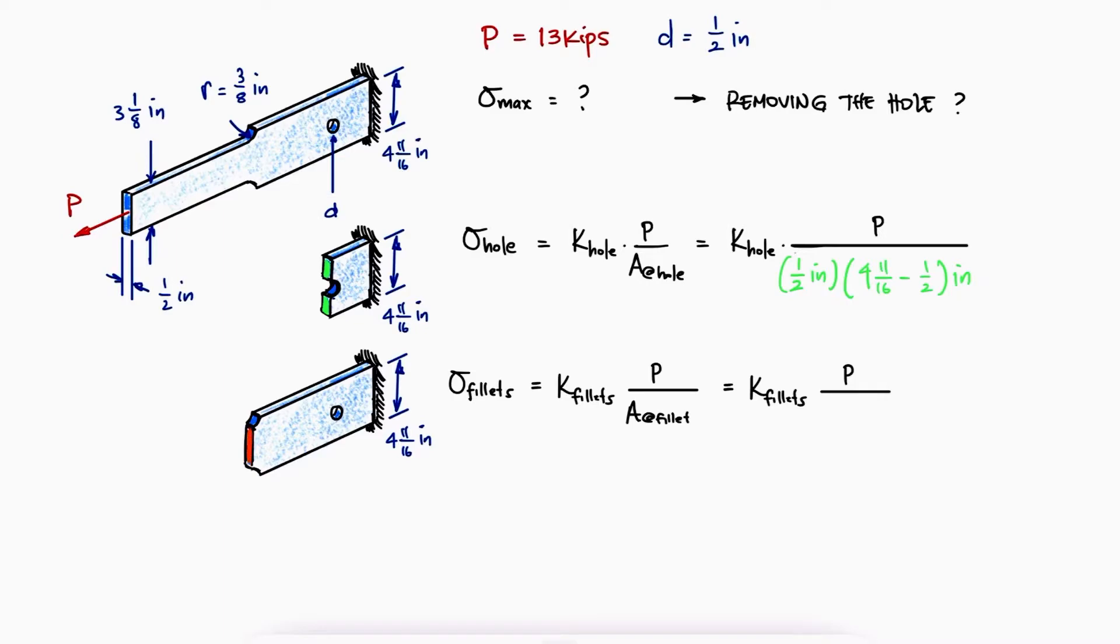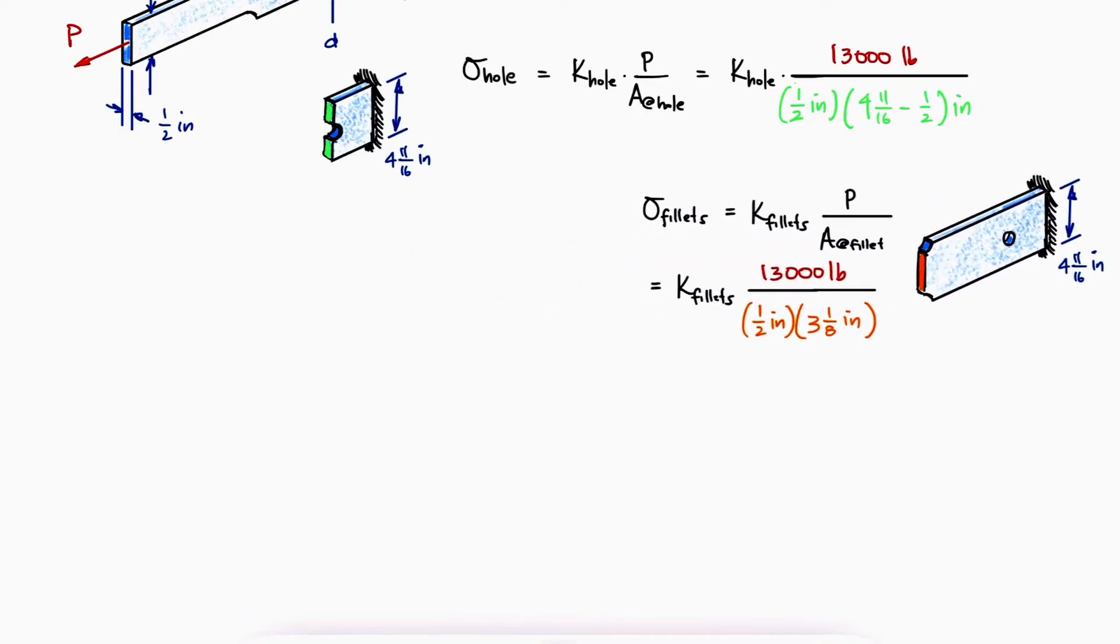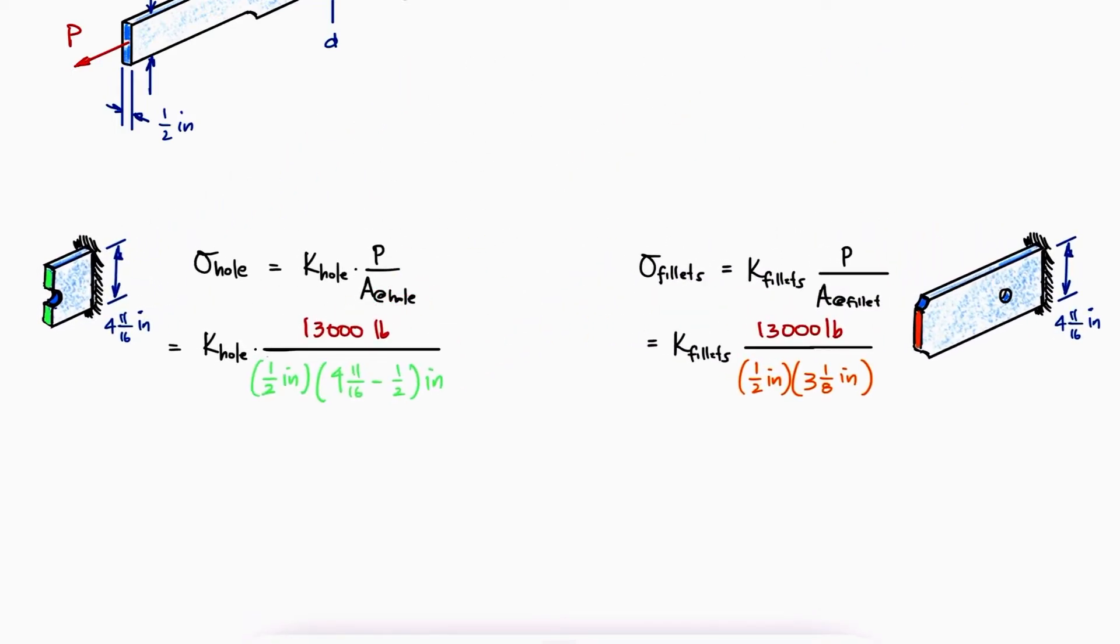The area at the fillet will be the thickness of the plate times the smaller width. In both cases, the axial load would be equal to 13 kips and to find the stress concentration factors, we will use the stress concentration factors charts and some of the dimensions of the plate.